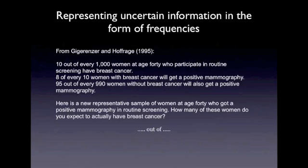As stated here, the information says: 10 out of every 1,000 women aged 40 who participate in routine screening have breast cancer. 8 of every 10 women with breast cancer will get a positive mammography. 95 out of every 990 women without breast cancer will also get a positive mammography. Here is a new representative sample of women aged 40 who got a positive mammography in routine screening. How many of these women do you expect to actually have breast cancer? Participants were asked to fill in the blanks — something out of something else.